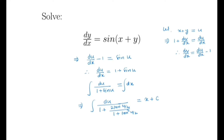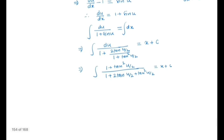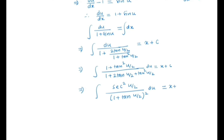The integral of dx is x plus c. By simplifying, we get the numerator as 1 plus tan(u/2) and the denominator as 1 plus 2·tan(u/2) plus tan²(u/2). Further simplifying, 1 plus tan²(u/2) is sec²(u/2), and the denominator is (1 plus tan(u/2)) squared, giving du equal to x plus c.